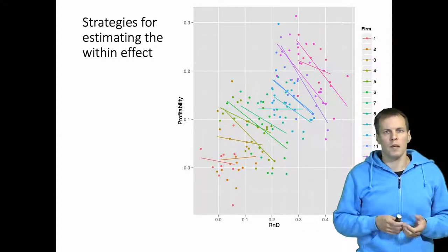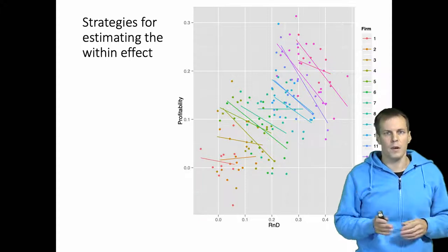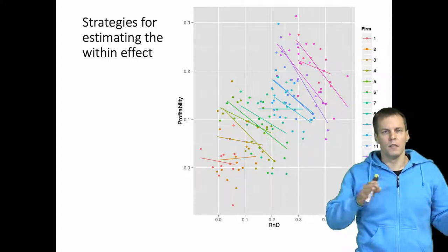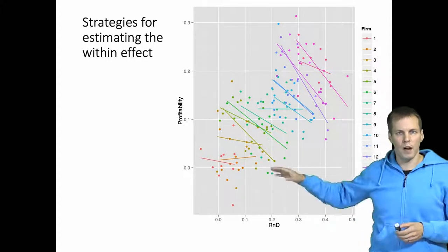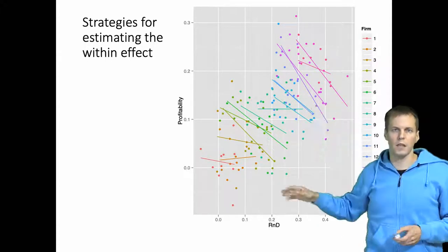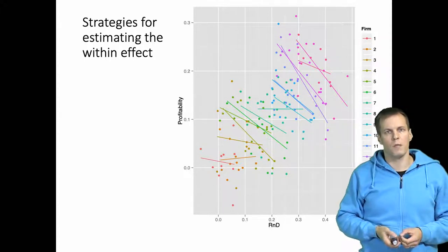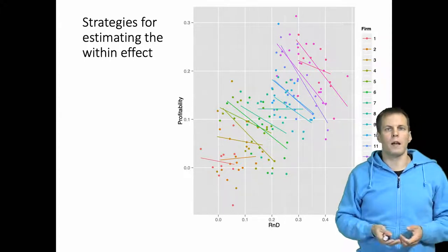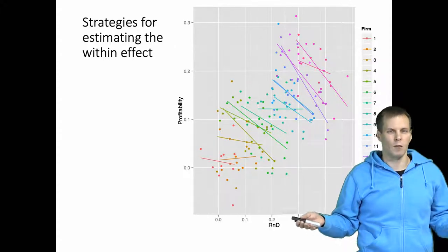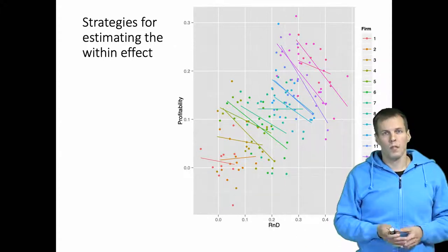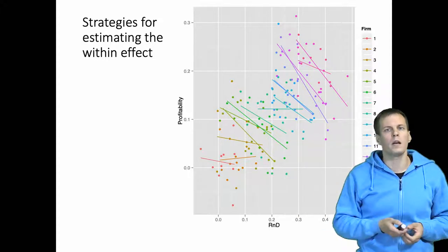We could estimate a separate regression model for each company. With 15 companies, we split the data into 15 subsamples and run a regression analysis on each, shown graphically here. But the problem is that we only have 10 observations per company, which is a very small number, and we get 15 different regression coefficients when typically we just want to report one. So how do we get the within effect?